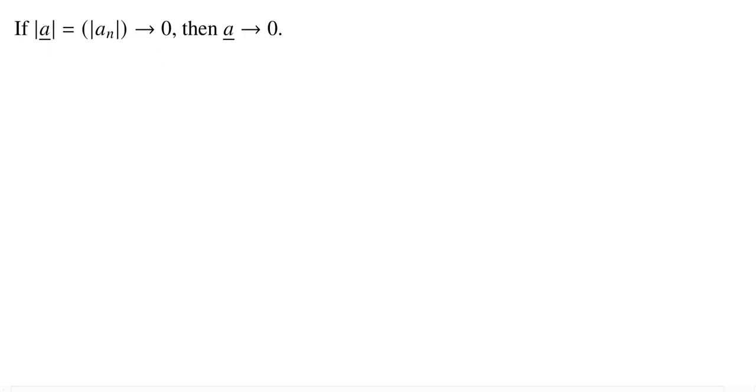So we know that means there's going to be some function. There exists a function m from our domain of closeness to our co-domain of eventually, such that if you have some positive real number epsilon and m is past the eventually number m of epsilon,